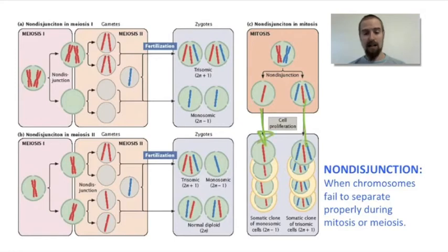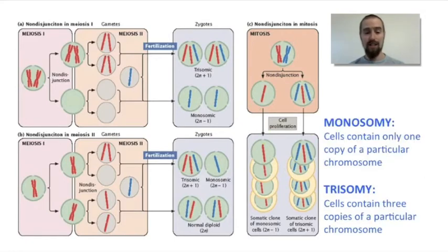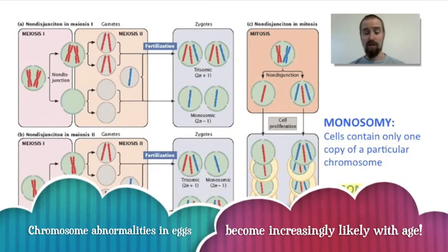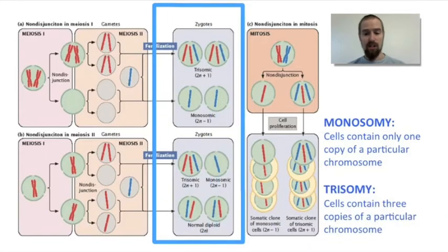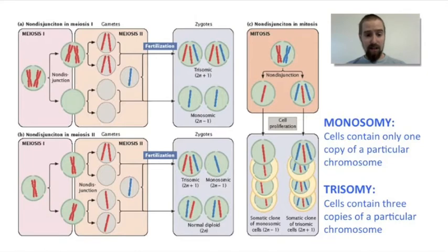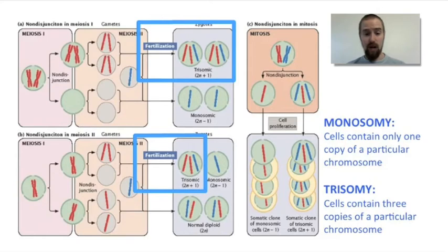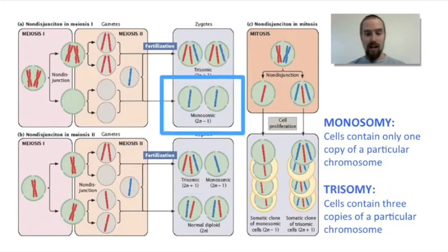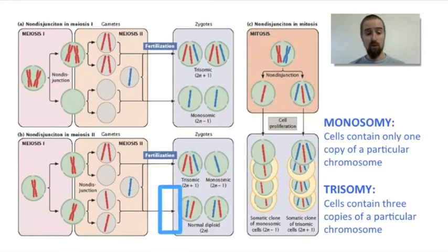More rounds of cell division will pass this abnormality on to other cells in the body. The end result of non-disjunction is either a monosomy or a trisomy. A monosomy is when cells contain only one copy of a chromosome when they should have two, and a trisomy is when cells contain three copies of a chromosome instead of the usual two. Here we can see that after fertilization, the resulting zygotes have an abnormal number of chromosomes. Zygotes may inherit one copy of a chromosome from one parent and two copies from the other parent — a trisomy — or one copy from one parent and zero from the other — a monosomy. The normal outcome is one copy inherited from each parent, for a total of two.